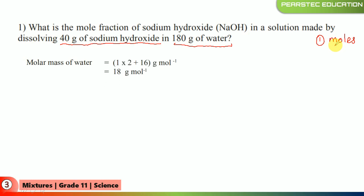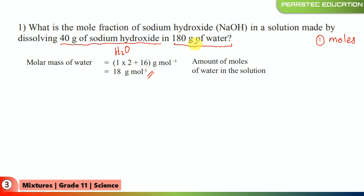First, let's find out the molar mass of water. H₂O: hydrogen has a molar mass of 1 and we have 2 hydrogens, so 1 × 2; oxygen has a molar mass of 16. That gives 18 grams per mole as the molar mass of water. From here we can find how many moles are in 180 grams of water: 180 grams divided by 18 grams per mole gives us 10 moles of water in the solution.